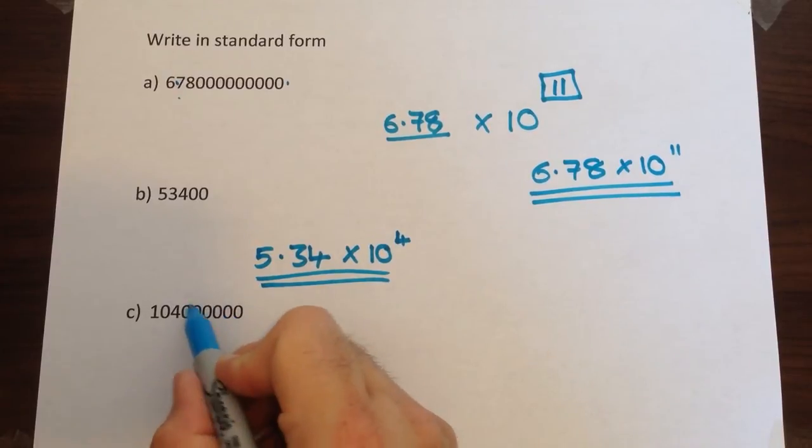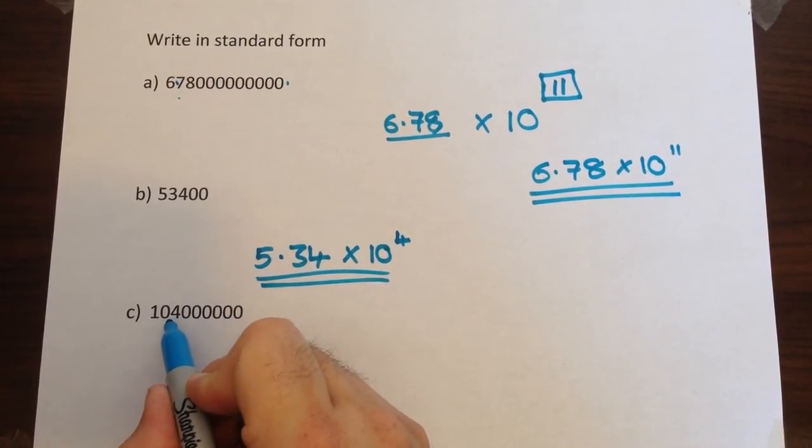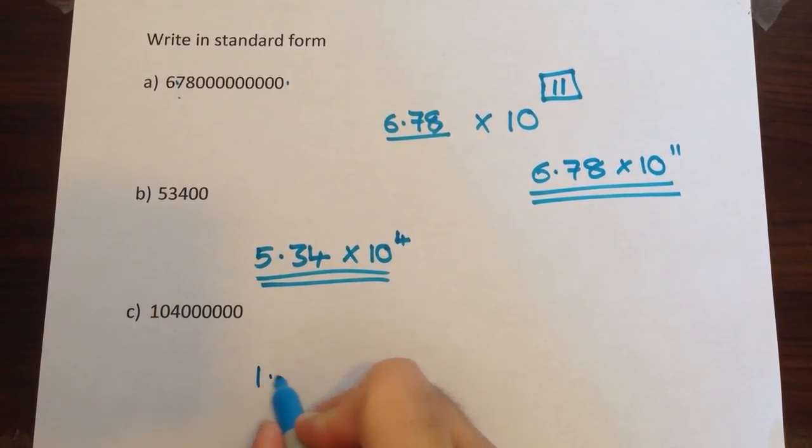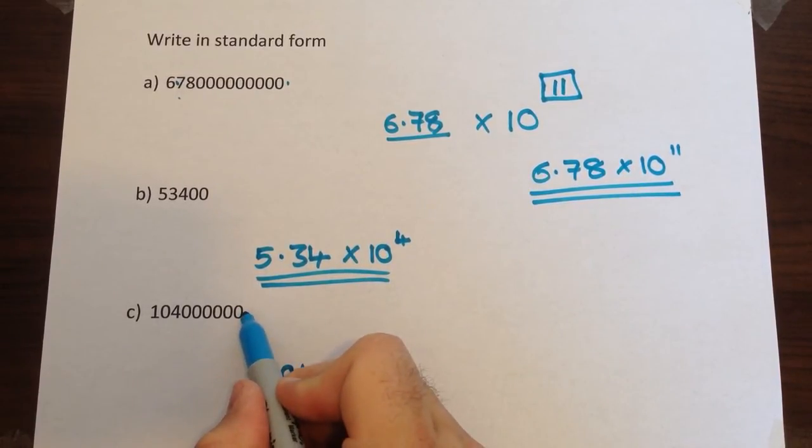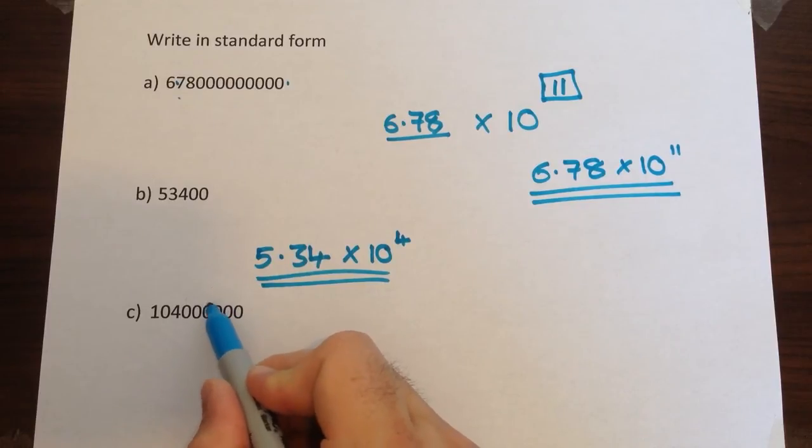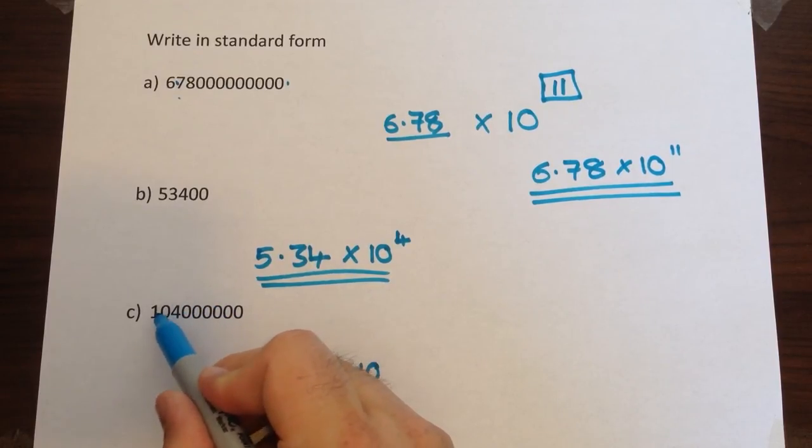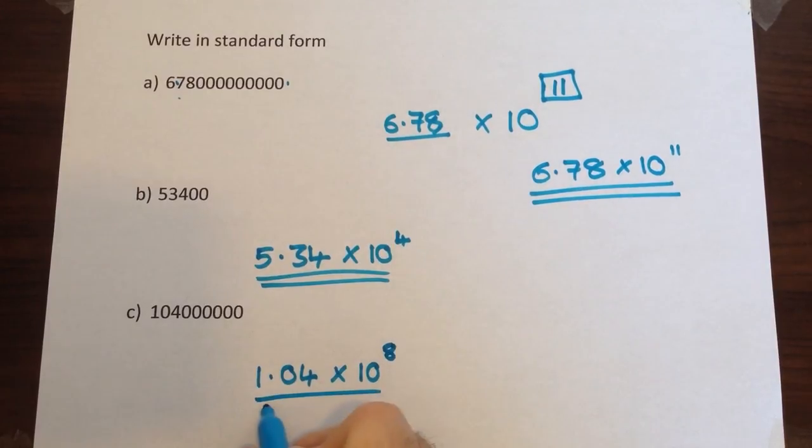And the last one, move the decimal point in. We can't stop between the 0 and 4 because 10.4 is ever so slightly bigger than 10. We'd have to go one more. So our first number would be 1.04 times 10. How far have we moved the decimal point? One, two, three, four, five, six, seven, eight places to the power of eight.